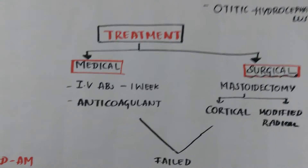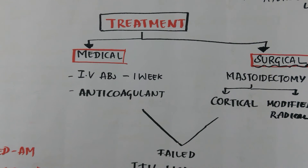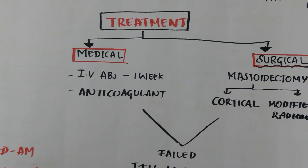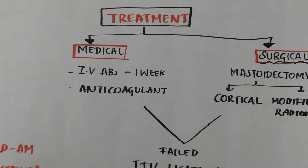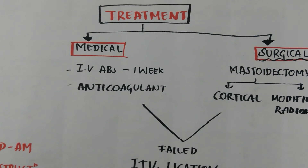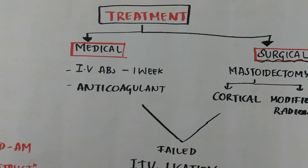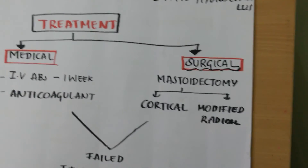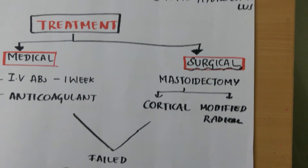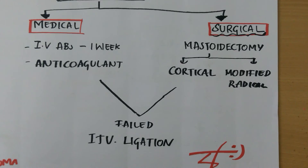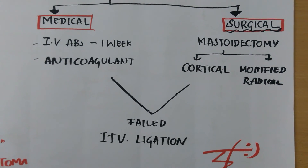Treatment — medical treatment: intravenous antibiotics for one week, started as early as possible, such as co-trimoxazole and metronidazole. Anticoagulant therapy is controversial, however it is advised. Surgical treatment: mastoidectomy, either cortical or modified radical. If both medical and surgical treatment fail, internal jugular vein ligation is done.